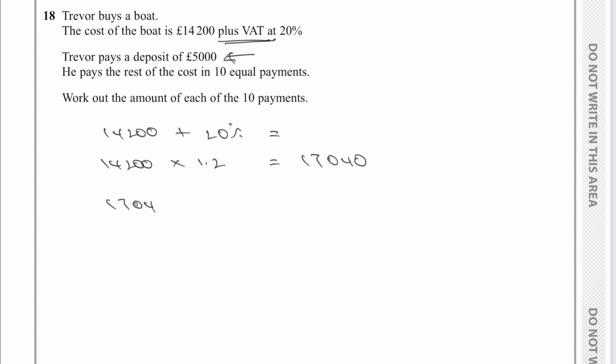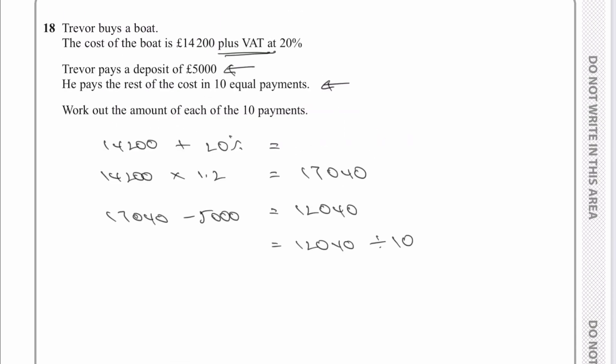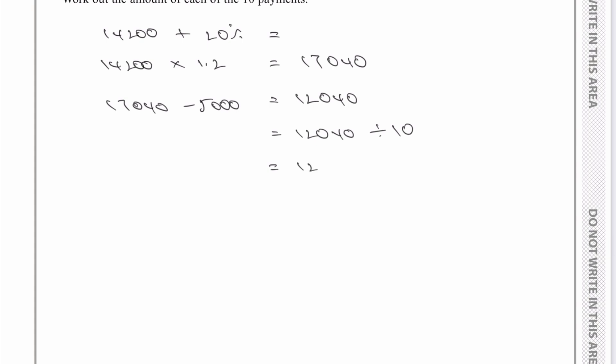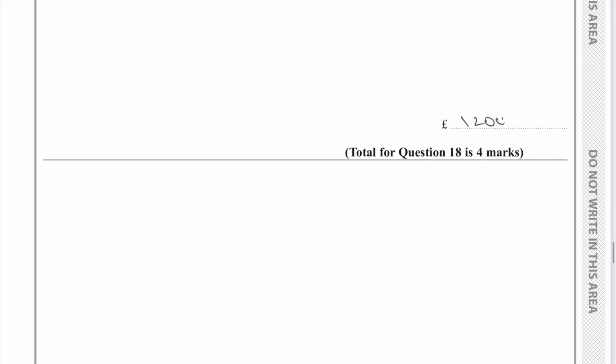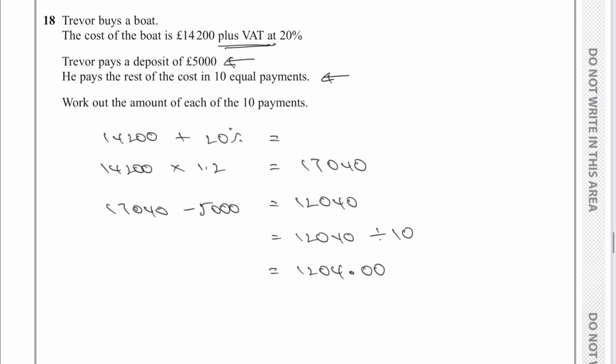So therefore, 17,040, take away 5,000 pounds, is going to equal 12,040, and that he pays in 10 equal payments. So I'm going to take my 12,040, and now I'm going to divide it by 10, because it's 10 equal payments, and that's going to equal 1,204 pounds. I've had an extra zero there because we normally have two zeros after the decimal point when we're talking about pounds, so therefore, the amount that he's going to pay every single month is going to be 1,204 pounds, and that would be the answer to that particular question.